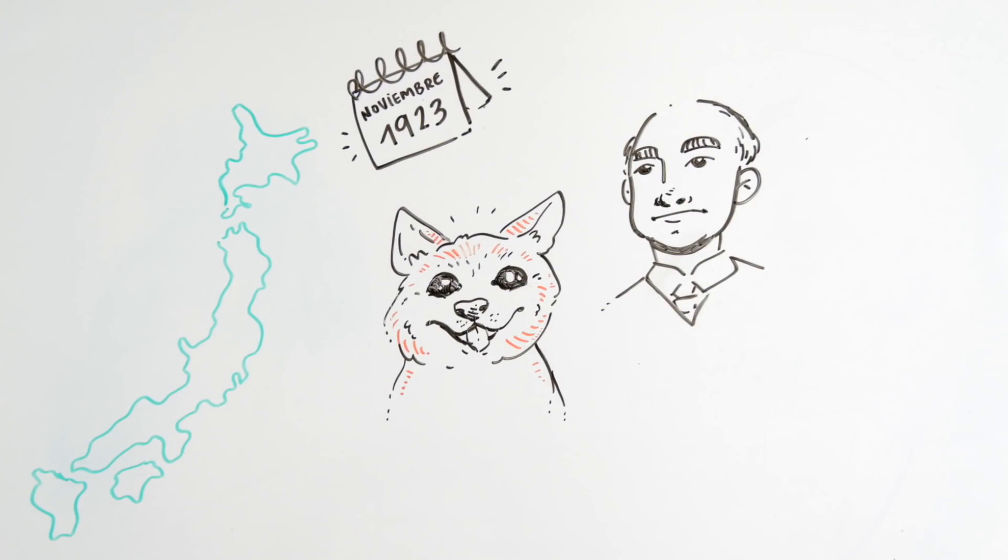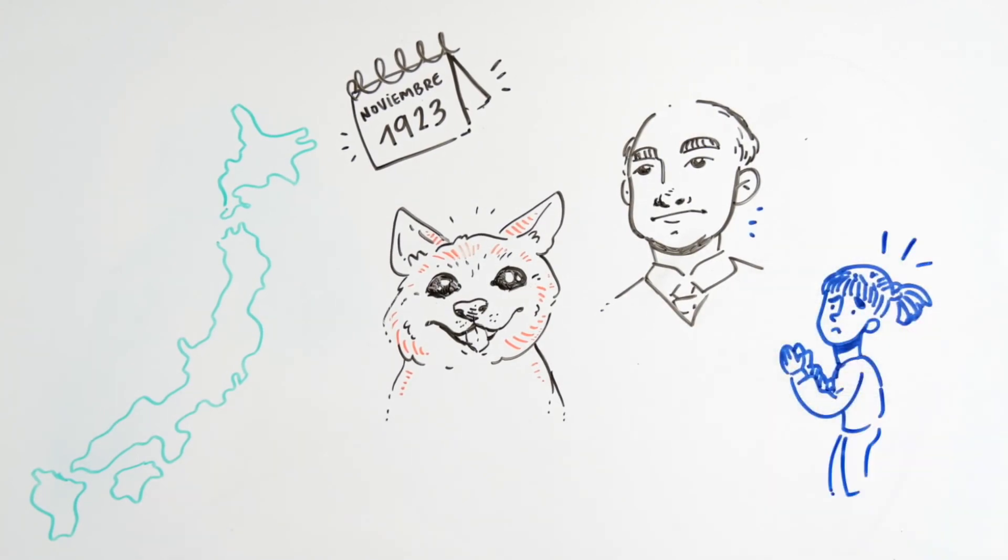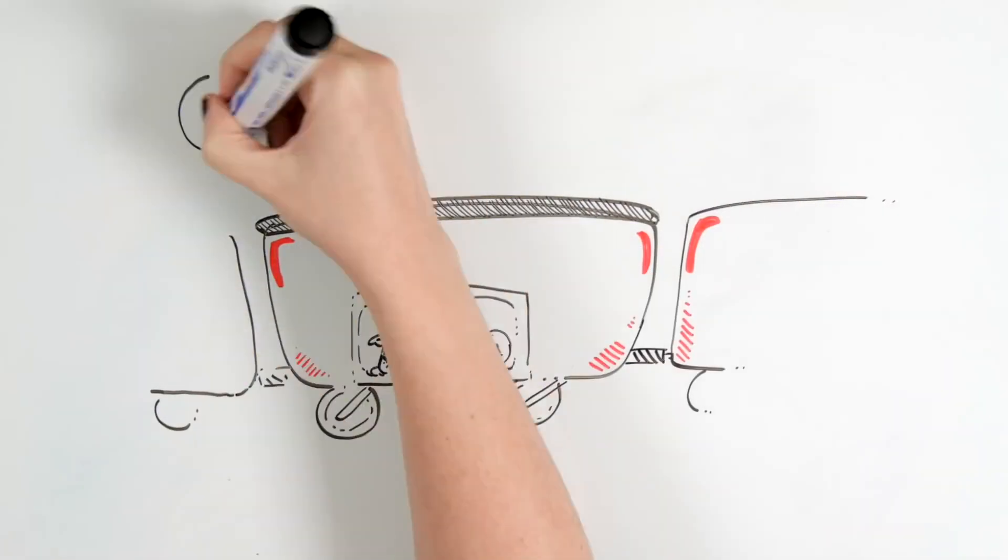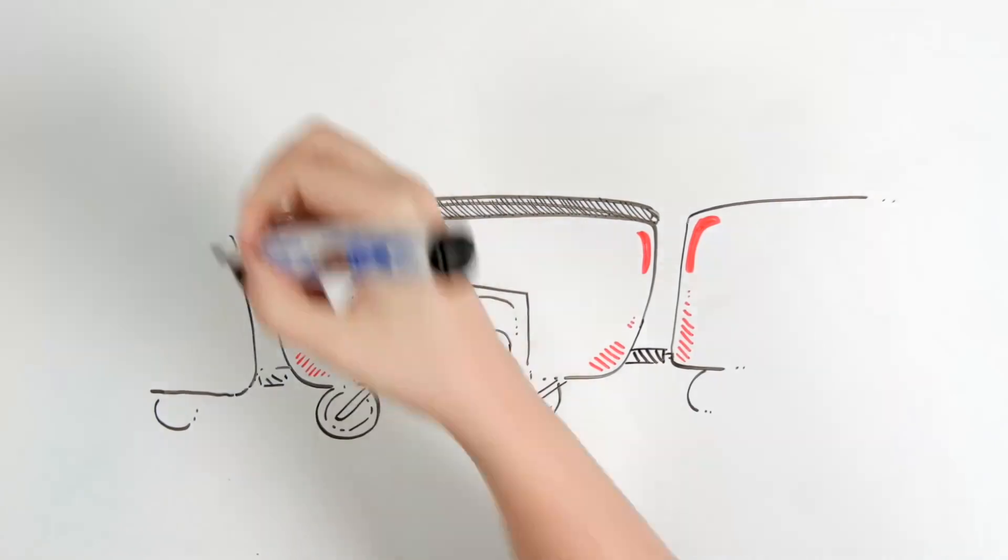He didn't want to keep him, but his daughter convinced him to. Hachiko was sent inside a box from Akita to the Shibuya Station. This journey took two days in a baggage wagon.